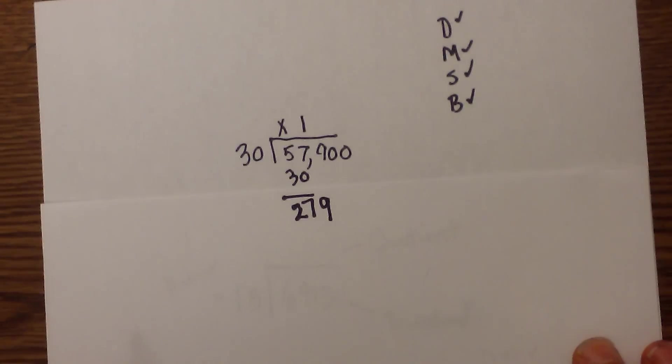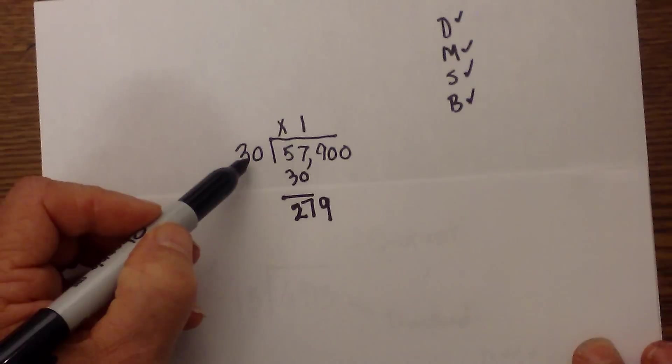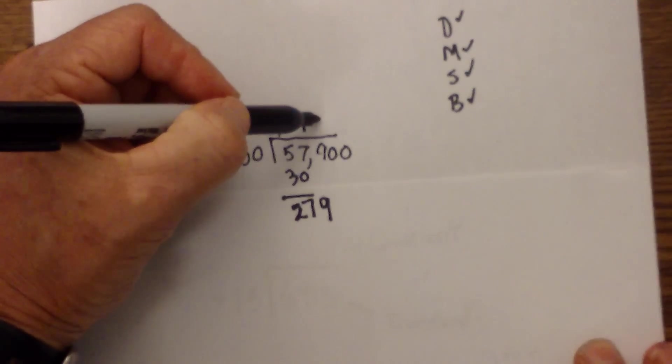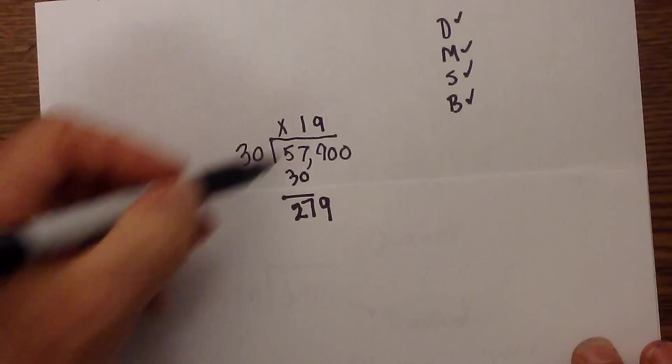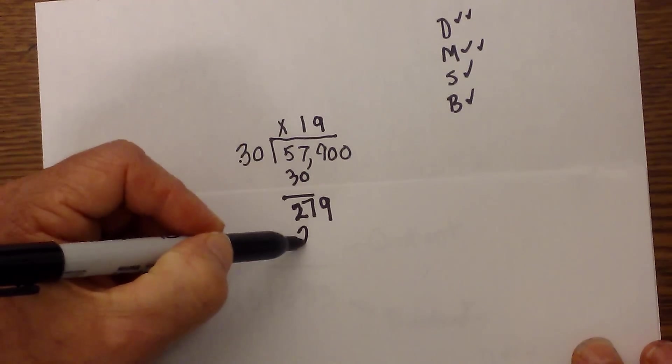Now we repeat. 279 divided by 30. 30 goes into 279, I think that is 9 times. Now we are doing multiplication. 9 times 30 is 270.